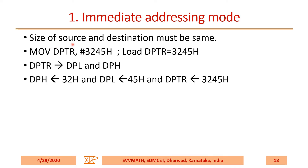In immediate addressing, size of source and destination must be the same. In the case of DPTR, it is 16 bits, so you use a 16-bit value. MOV DPTR, #3245H will load DPTR with 3245H. DPTR can be accessed as DPH and DPL, so DPH will get 32H and DPL will get 45H.